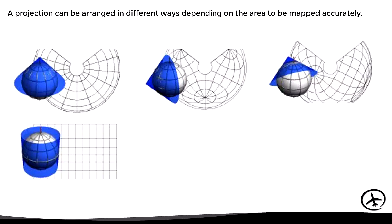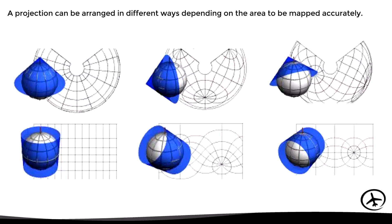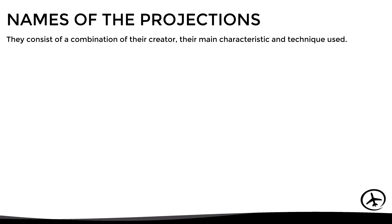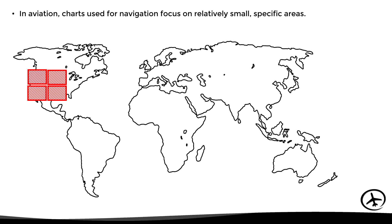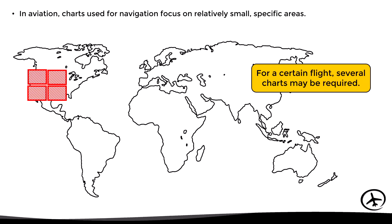A projection can be arranged in different ways depending on the area to be mapped accurately. Regarding the names of projections, they consist of a combination of their creator, their main characteristic, and the technique used. For example, the most used projections for navigation are the Lambert Conformal Conical and the Mercator Conformal Cylindrical. To avoid excessive distortion, charts used for air navigation focus on relatively small specific areas, and therefore several charts may be required for a certain flight.